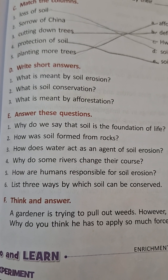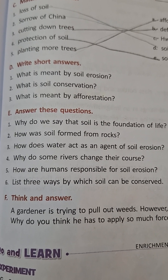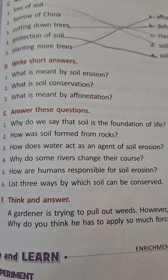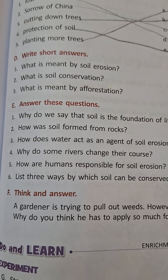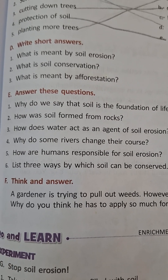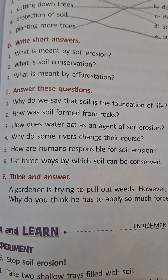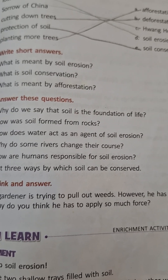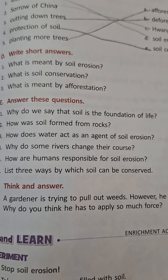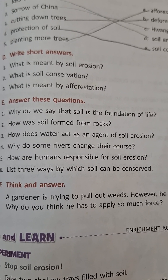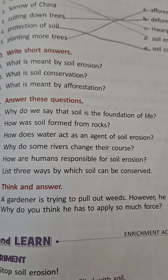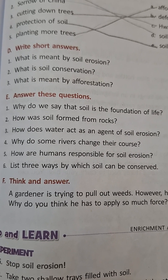How does water act as an agent of soil erosion? Running water acts as an agent of soil erosion because flooded rivers and running water remove the topsoil. Running water washes the topsoil off hills. When it rains heavily or when it floods, water carries the top layer of soil with it. On hill slopes, water rushes down and carries all the soil, acting as an agent of soil erosion.